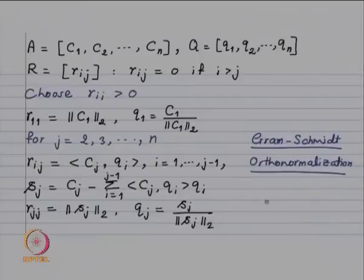This is nothing but the Gram-Schmidt orthonormalization process. If we have n linearly independent vectors, then we can construct a set of n orthonormal vectors with the property that the span of C1, C2, ..., Cj is the same as the span of Q1, Q2, ..., Qj. Thus QR decomposition of A is nothing but Gram-Schmidt orthonormalization applied to columns of A. The orthonormal vectors obtained form the orthogonal matrix Q, and the various coefficients rij form the upper triangular matrix R.